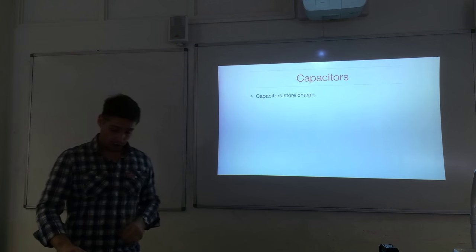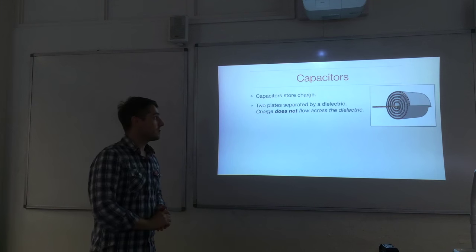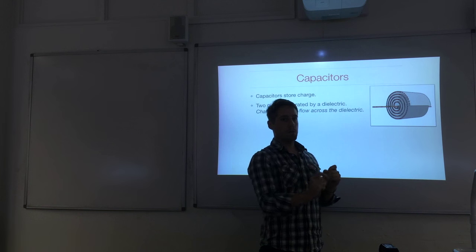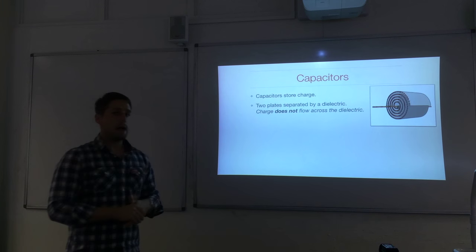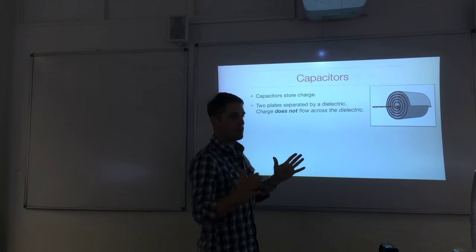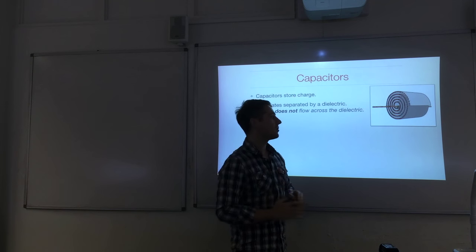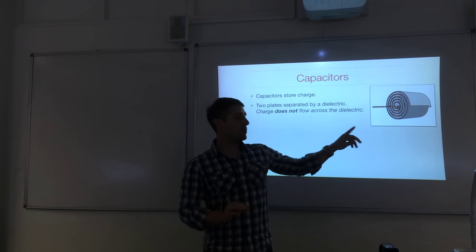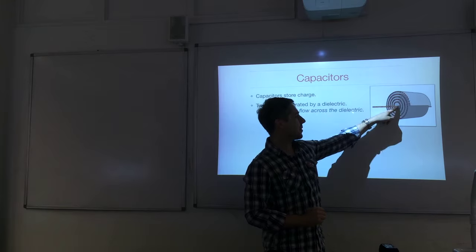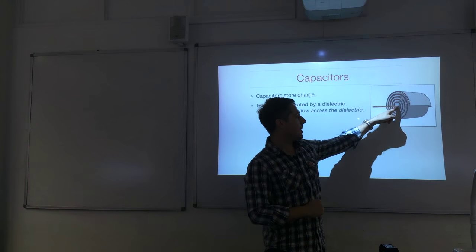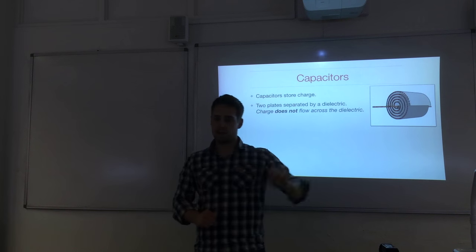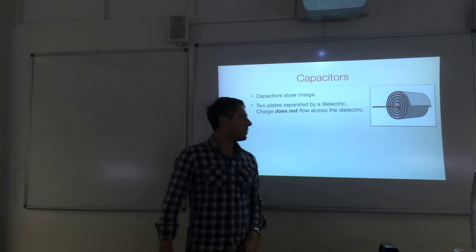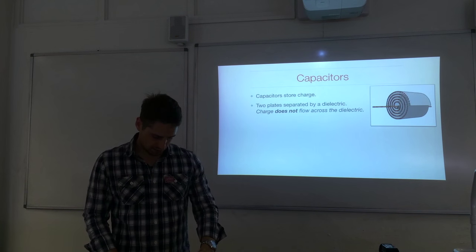Capacitors store charge. They have two plates which get charged up. Between the plates, to prevent any current flowing between them, there's a dielectric material and that's an insulator. So there is no charge flowing across the dielectric material during normal operation. In order to make the plates as big as possible, they're rolled up. We've got an electrode in the middle and the plates are coiled up with the dielectric material sandwiched between them.